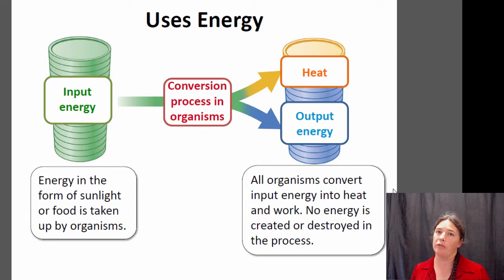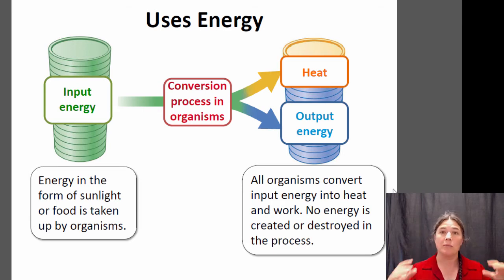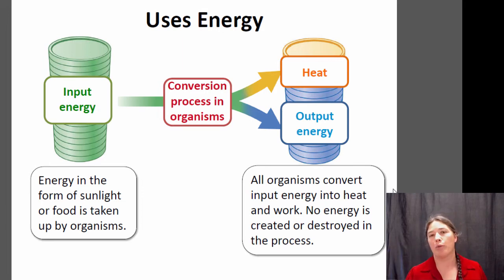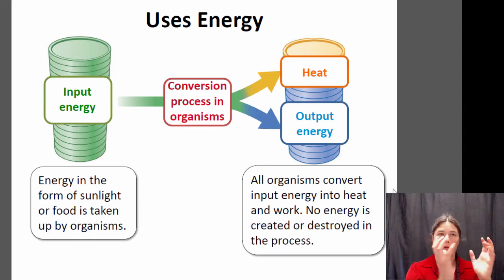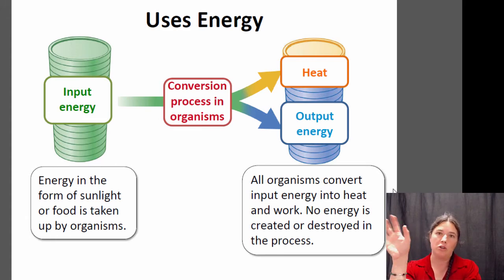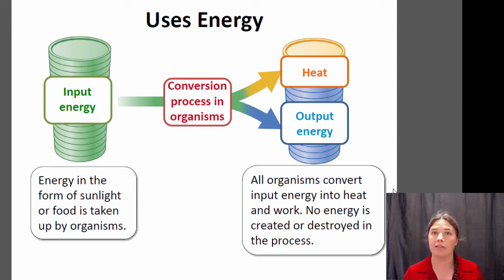One important thing to remember is the first law of thermodynamics: energy can neither be created nor destroyed. If a living thing needs to create a new protein, the energy to make that protein has to come from somewhere — you can't make it in the absence of energy. Generally, these transformation processes — turning sunlight into sugar or sugar into chemical energy to build new molecules — are not completely efficient. There's usually some amount of energy lost as heat, so you do tend to see a reduction in energy as you go up the food chain. We'll talk more about that when we get to ecology.